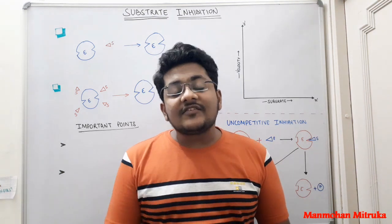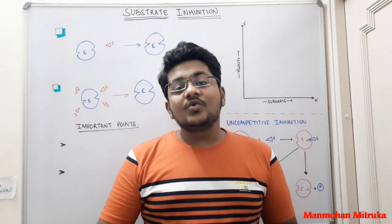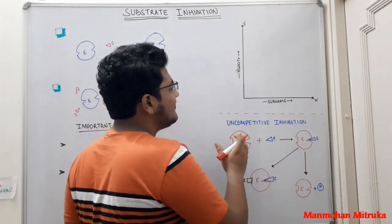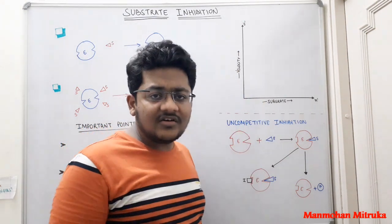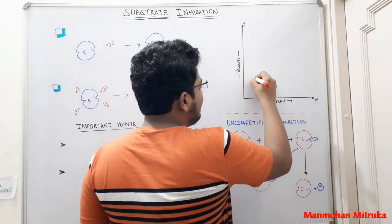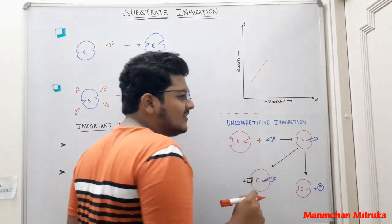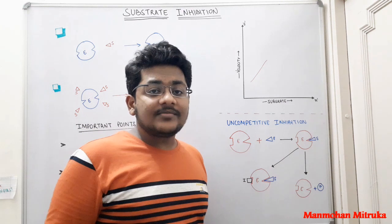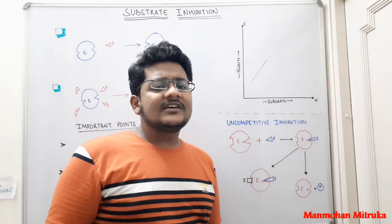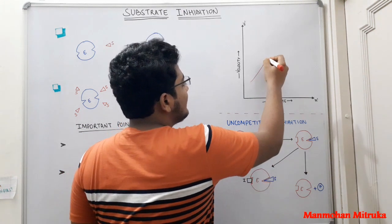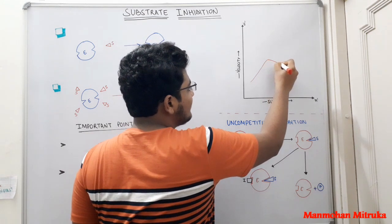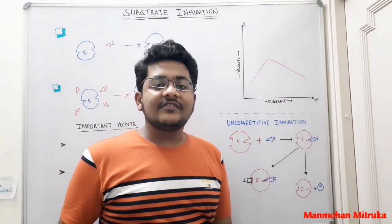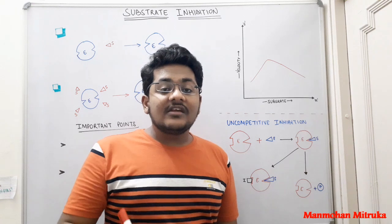The increase in concentration of substrate beyond a level is going to inhibit the reaction. If we see this graph between the velocity of the reaction and the substrate concentration, we find that with an increase in substrate concentration, at first there is an increase in the reaction velocity, but after a certain substrate concentration is achieved, if we further increase the substrate concentration, the velocity of reaction is going to decrease or even become zero.